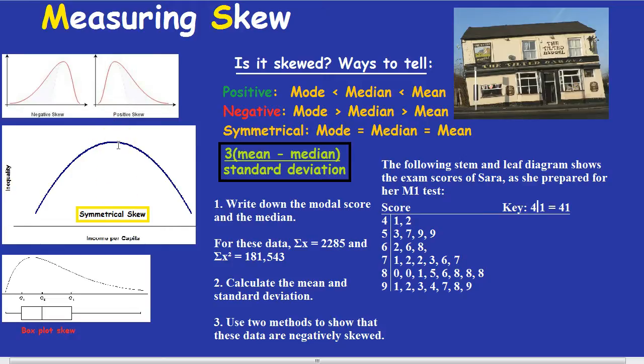So first, simply by looking at the data, and it could be in a stem and leaf diagram as well, if it's bulging away from the y-axis, it's negatively skewed. If it's bulging towards, it's positively skewed.